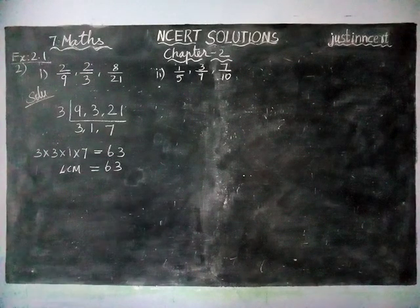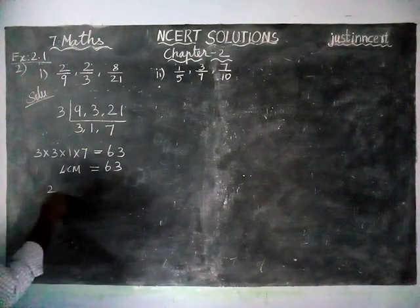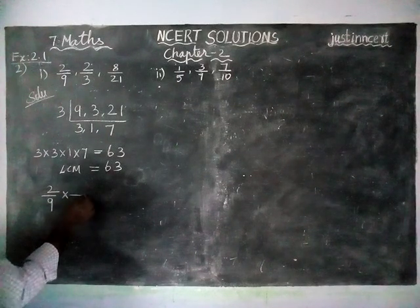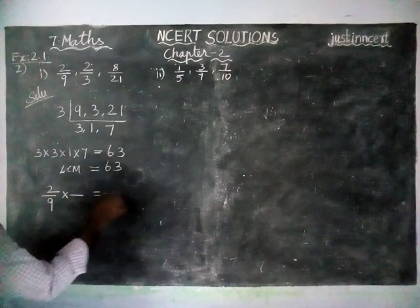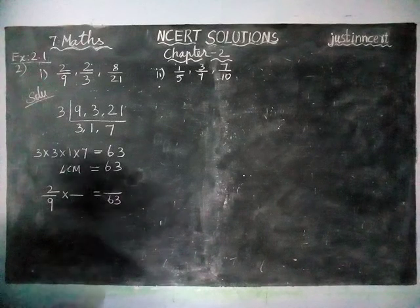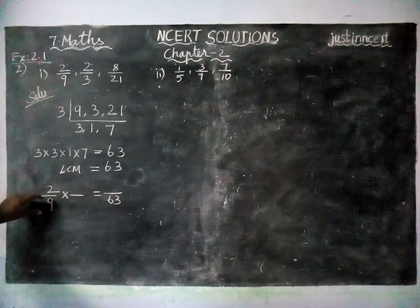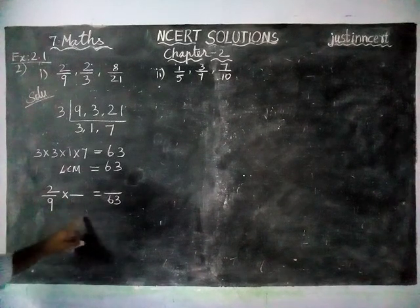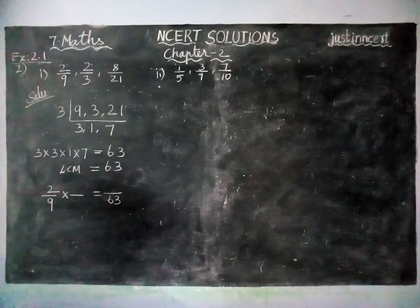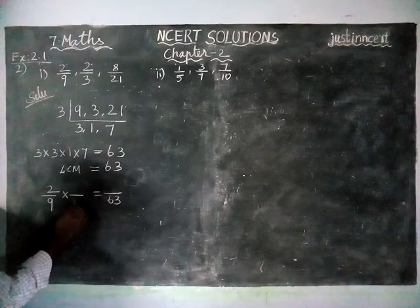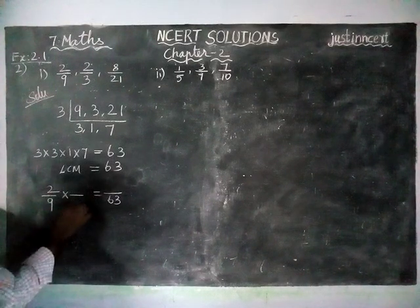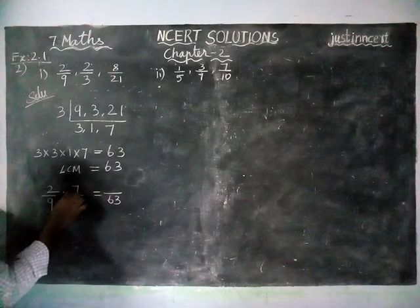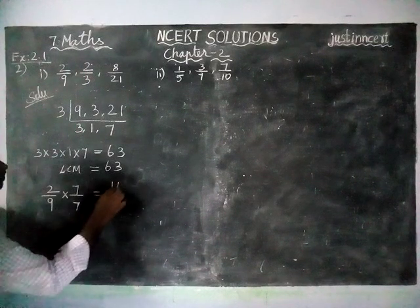Now we are going to convert this 2 by 9 into dash by dash equals 63. Listen carefully, we have denominator 9, we have to multiply with some number to get 63. When we are multiplying by 7, 9 times 7 is 63. The same 7 is multiplied here also, 2 times 7 is 14.